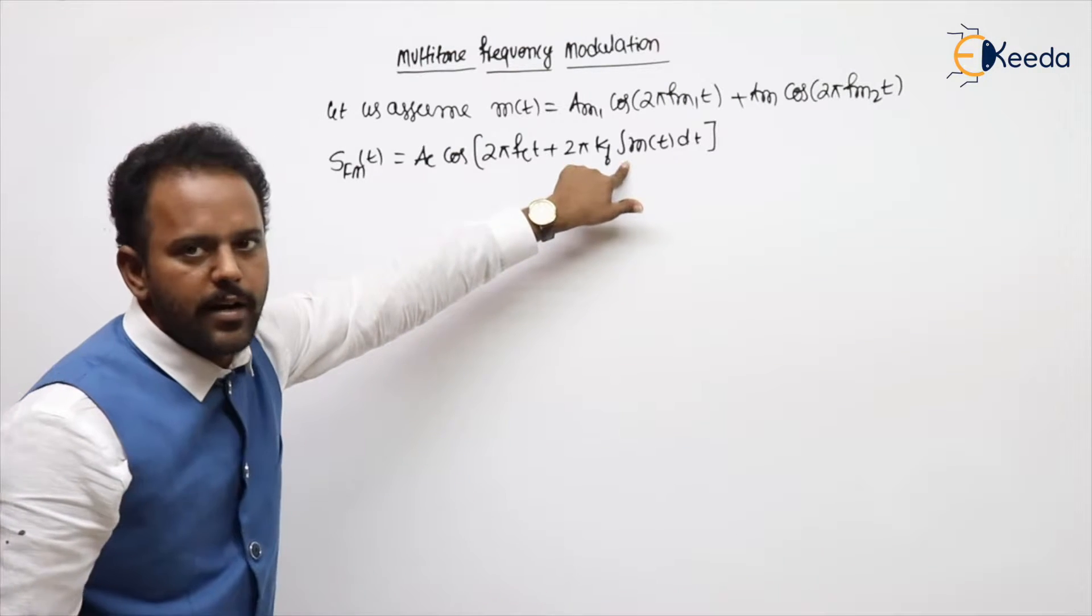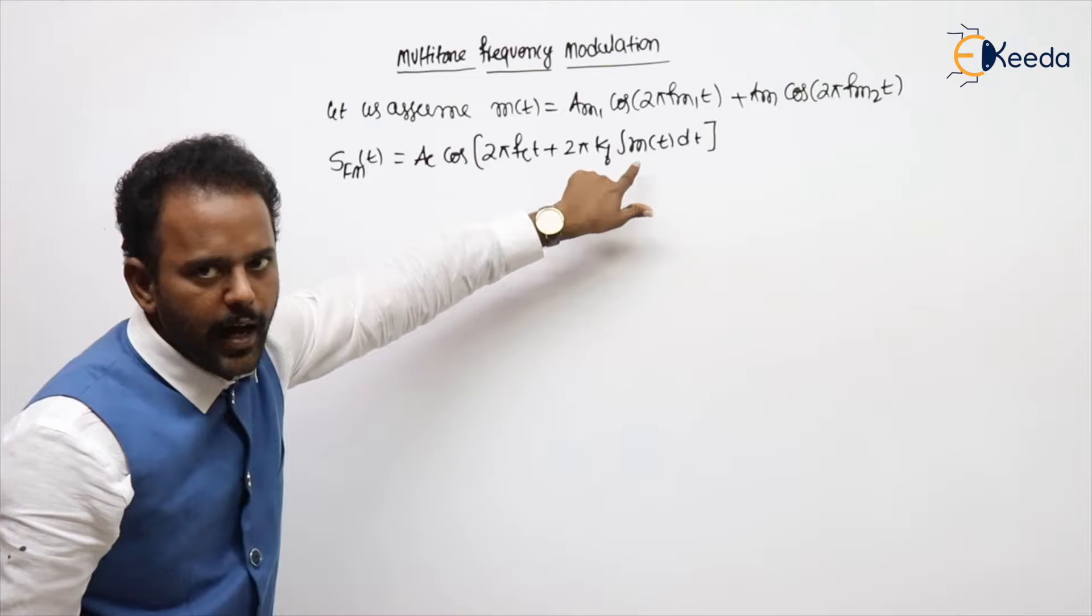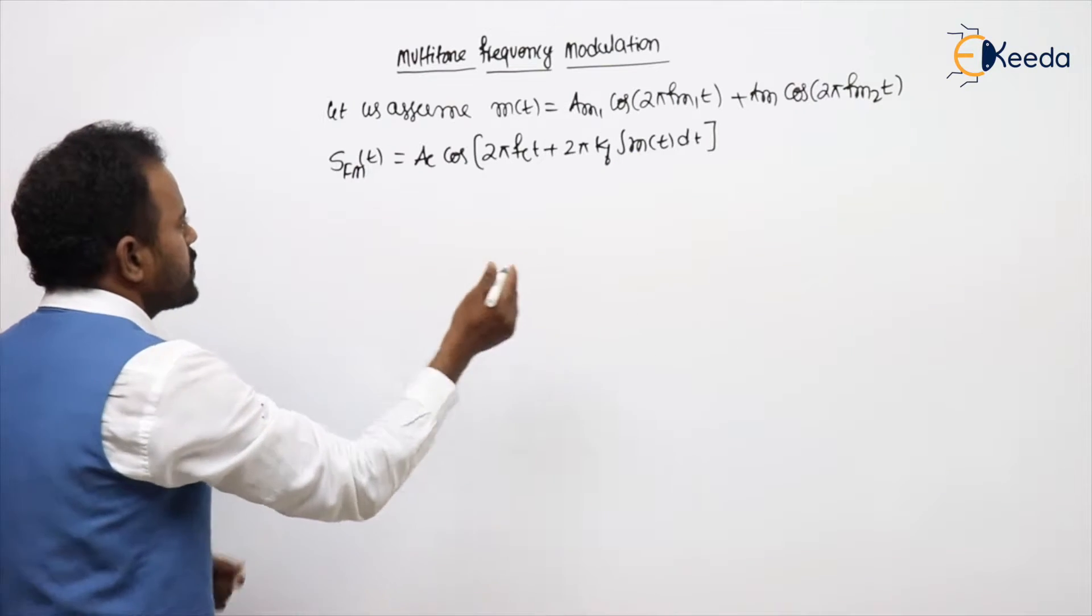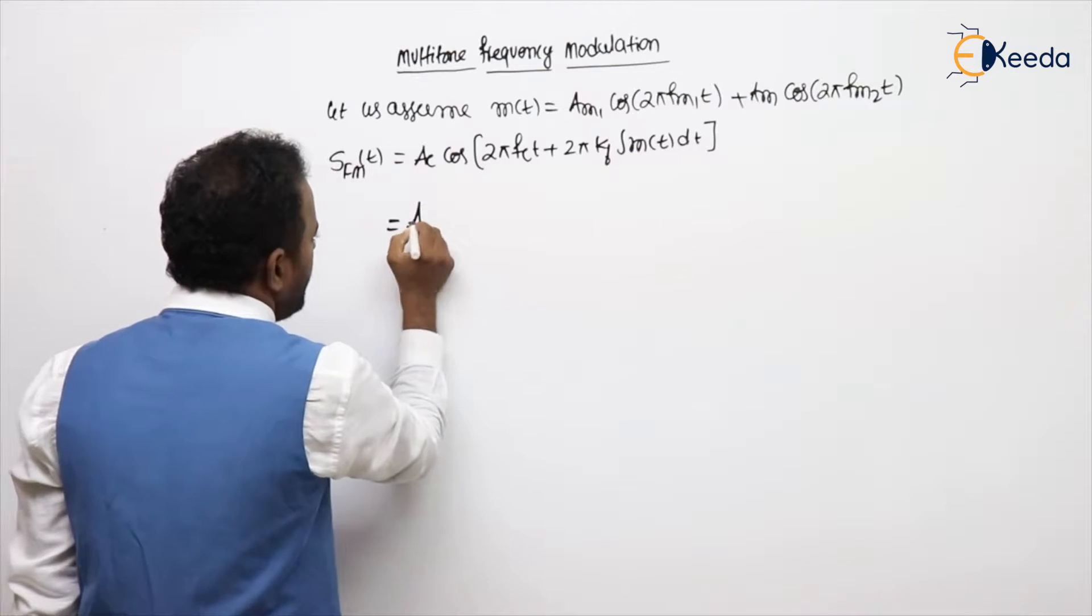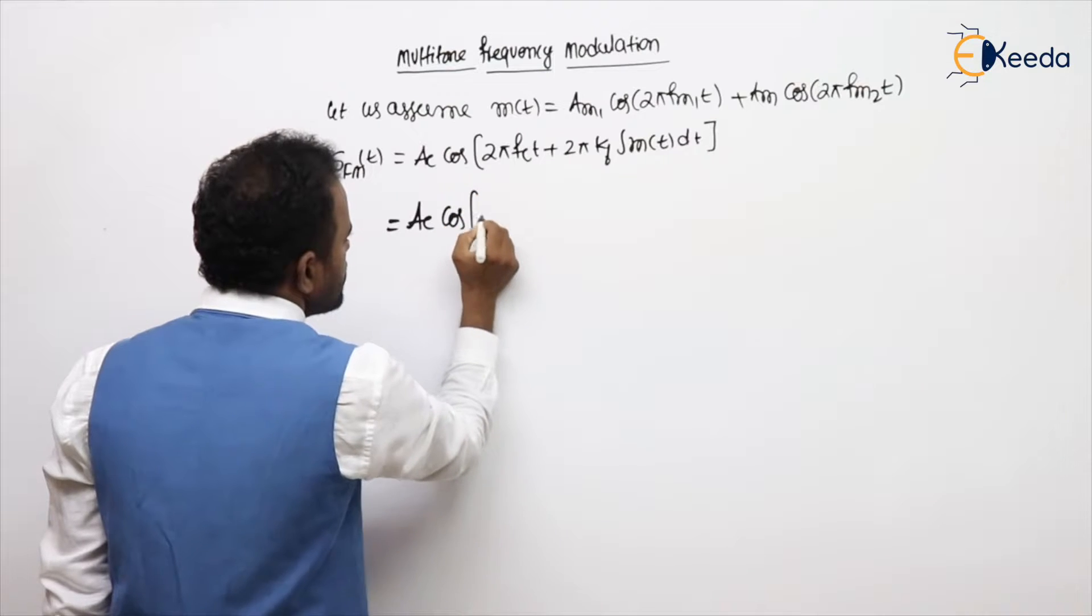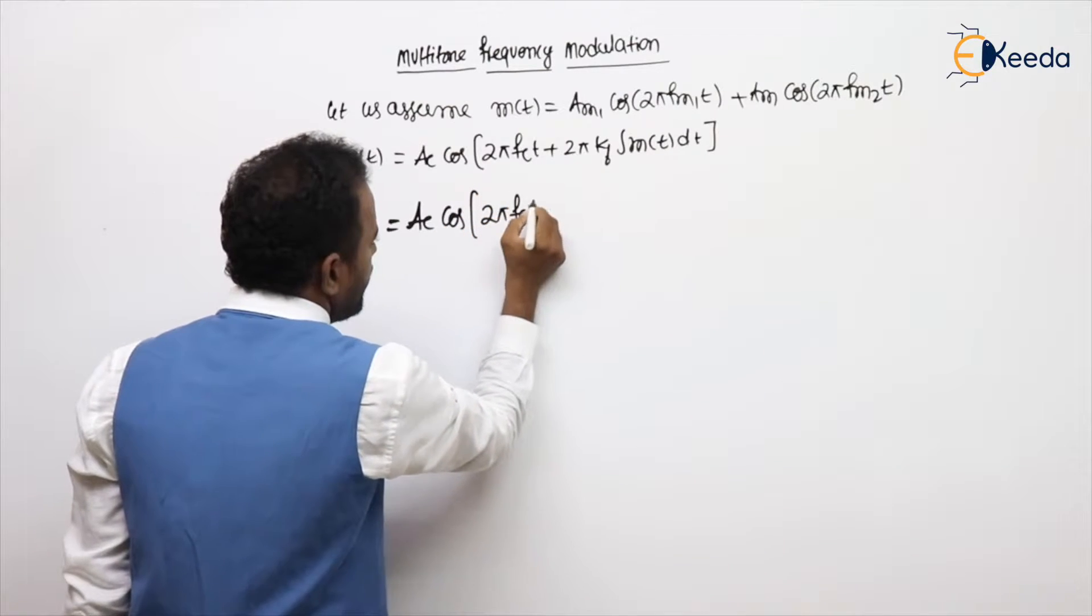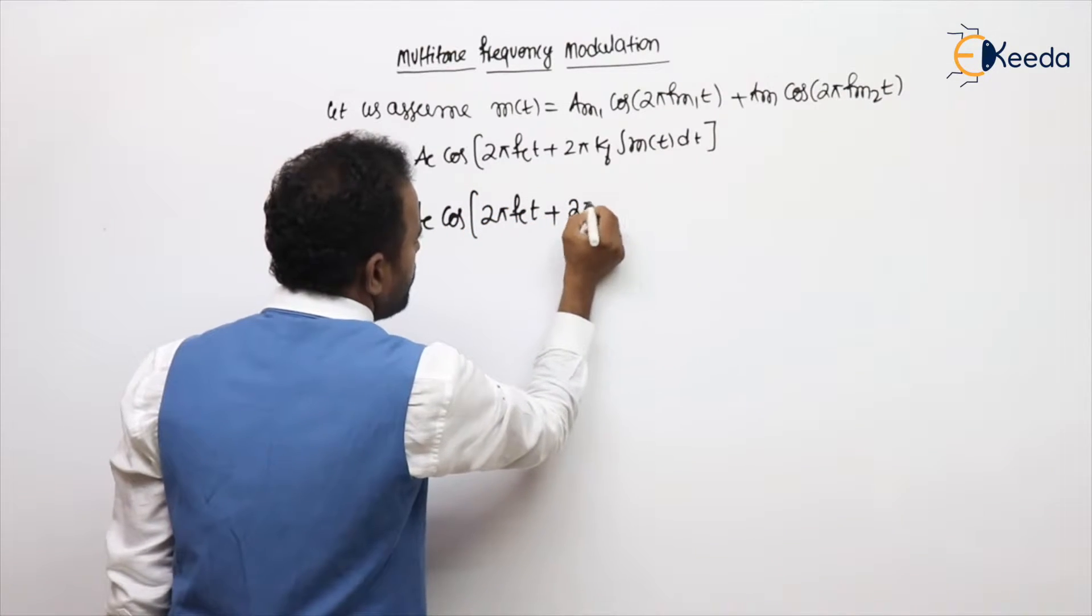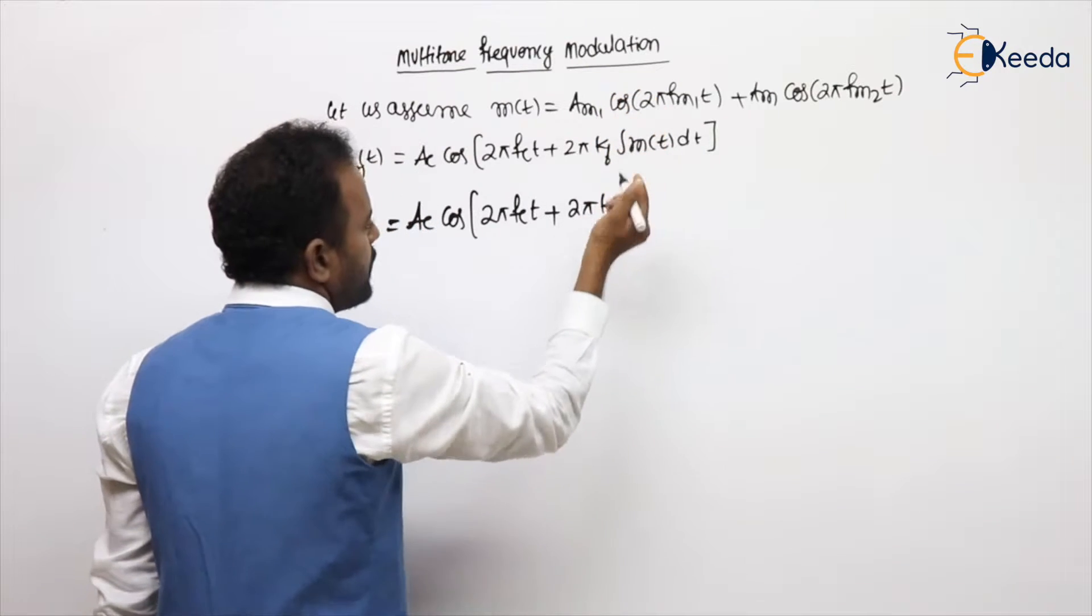Now substitute the m of t. If we substitute the m of t value, then it will be Ac cos(2π fc t + 2π kf), substitute m of t.